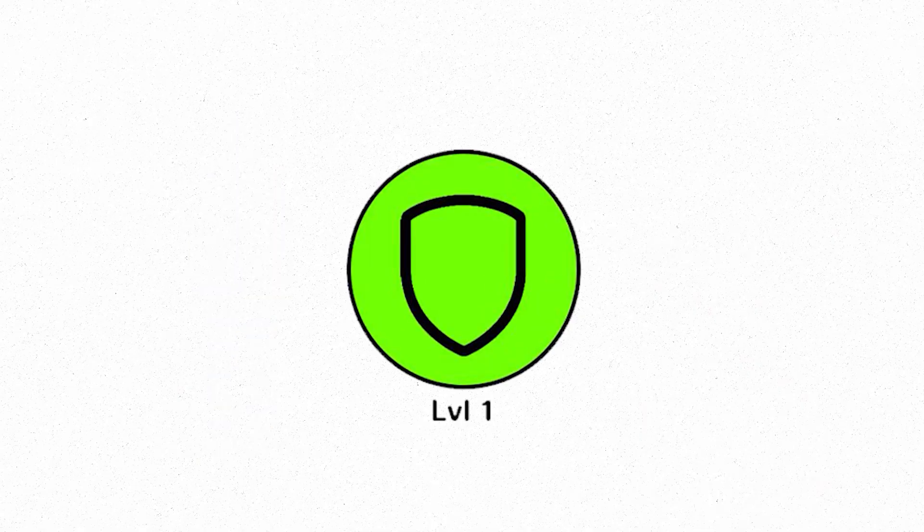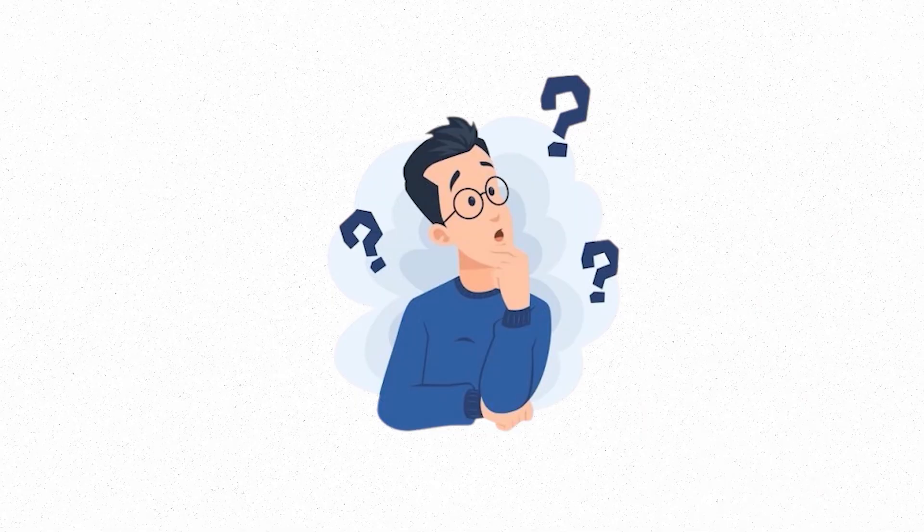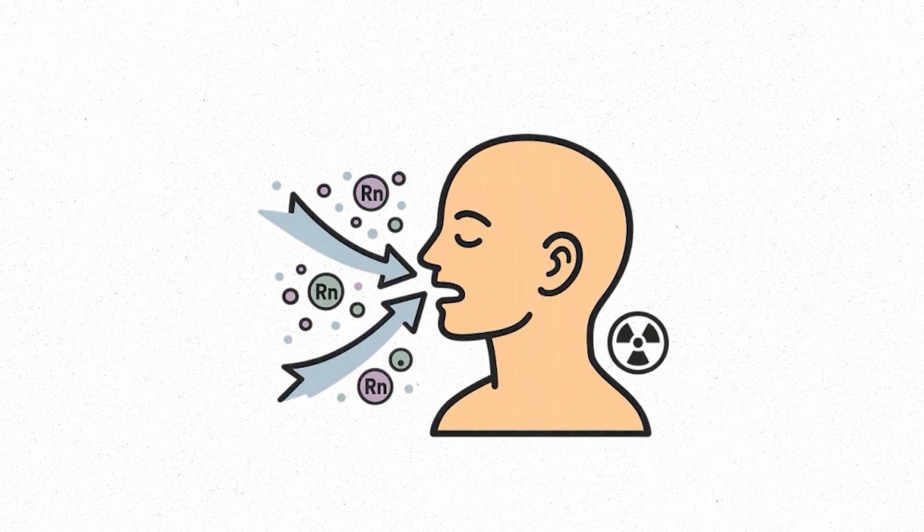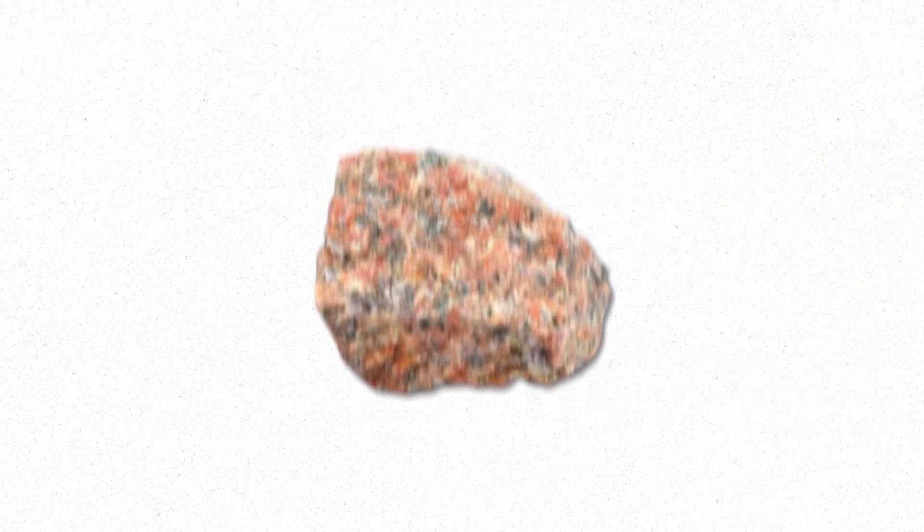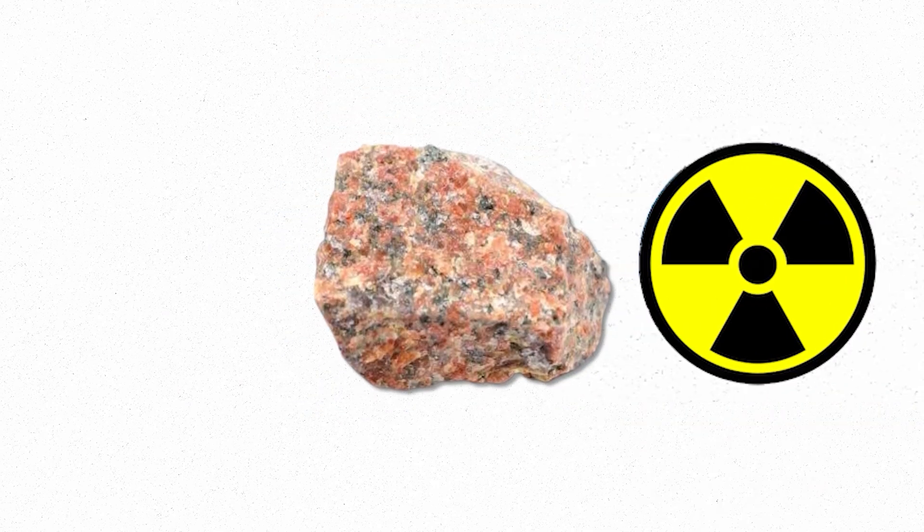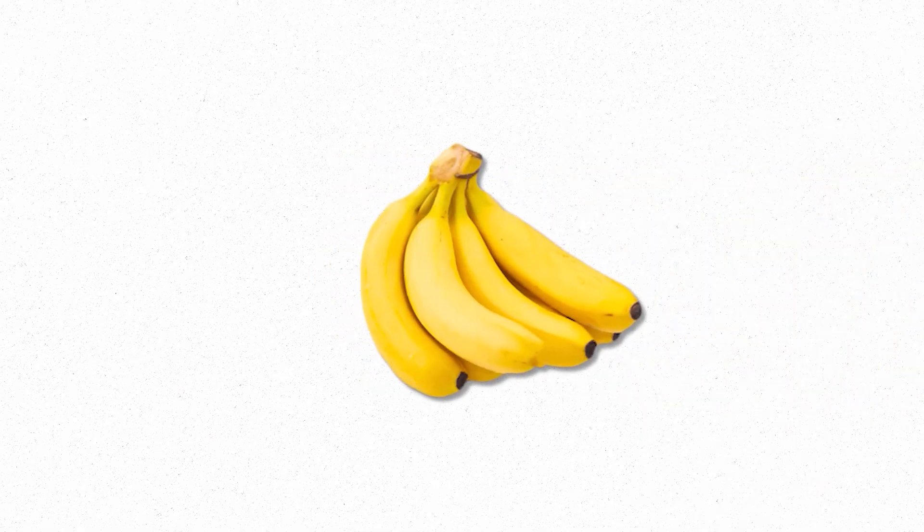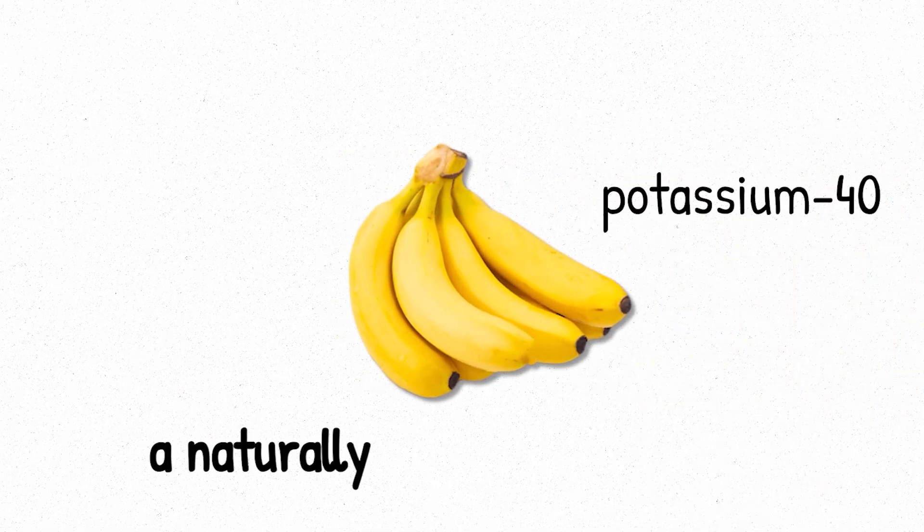On average, a human receives around 0.1 to 0.3 microsieverts per hour, adding up to about 2 to 3 millisieverts per year. This level is considered harmless. It's so low that you'd never feel it, notice it, or detect it without special equipment. But it's always there. Every breath you take carries tiny amounts of radon gas. Every step you make across granite rock gives off slight radiation. Even bananas contain potassium-40, a naturally radioactive isotope.